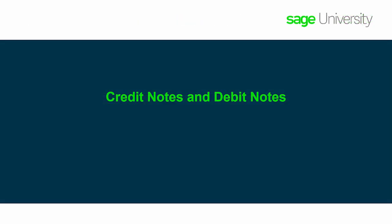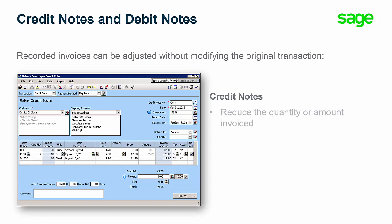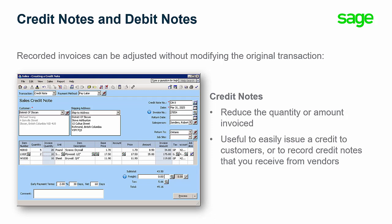First, let's have a look at credit notes and debit notes. With Sage 50 2019.2, after a customer or a vendor invoice has been recorded, it can easily be adjusted without modifying the original transaction. A credit note allows you to reduce the quantity or the amount invoiced. This is particularly useful to easily issue a credit to customers or to record credit notes that you receive from vendors.